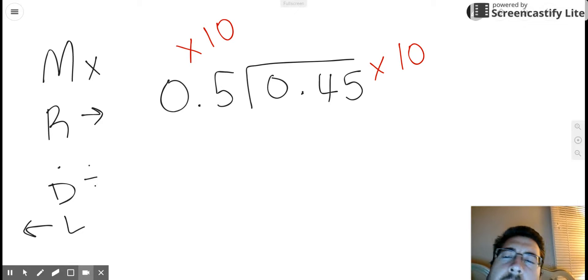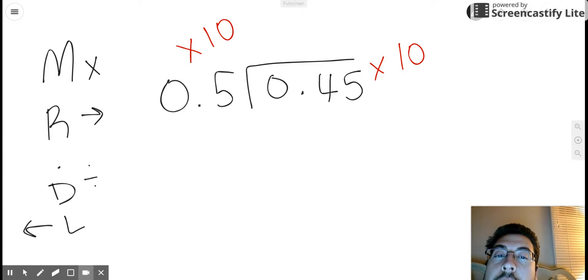So in this problem we're multiplying two decimals by a power of 10, so we're going to be moving our decimal points to the right.